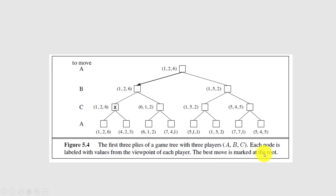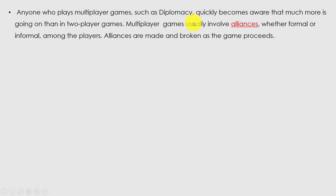Anyone who plays multiplayer games, such as Diplomacy, quickly becomes aware that much more is going on than in two-player games. Multiplayer games usually involve alliances, whether formal or informal, among the players. Alliances are made and broken as the game proceeds. For example, if there are three players and it is the first player's move, the other two players may make an alliance. If there is a step for player B, then A and C can make an alliance.